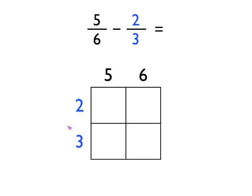And then take the second fraction, the 2 thirds, split the 2 and 3 up and write them beside the square, as you can see there. We're subtracting fractions this time. So in the top left box, you draw a big subtract sign.